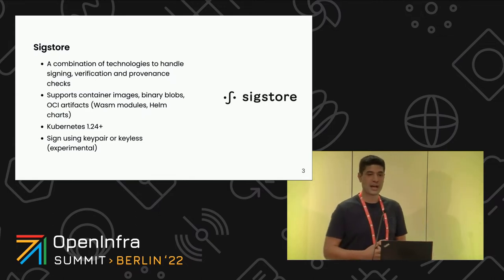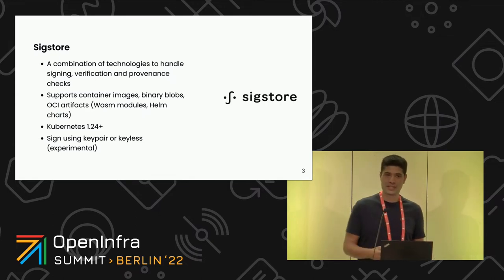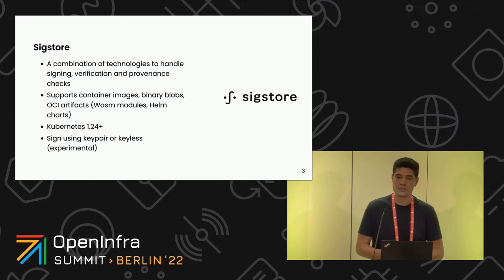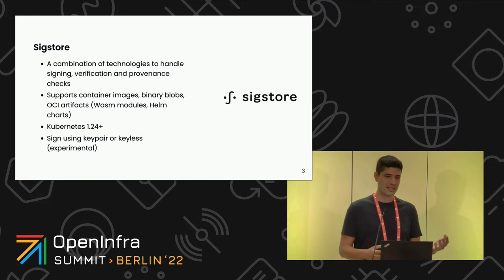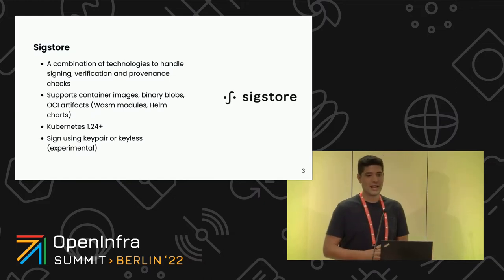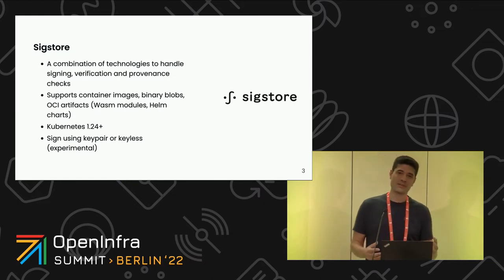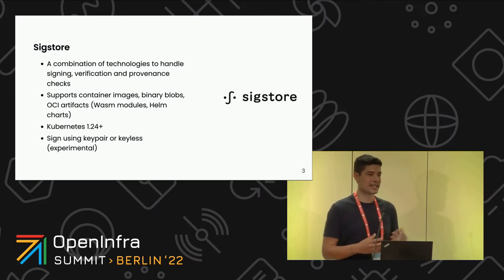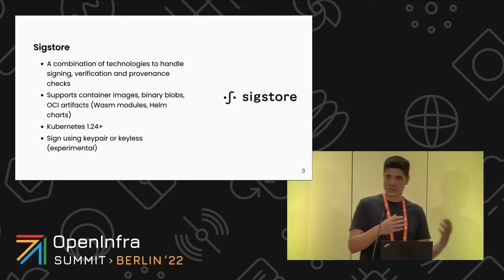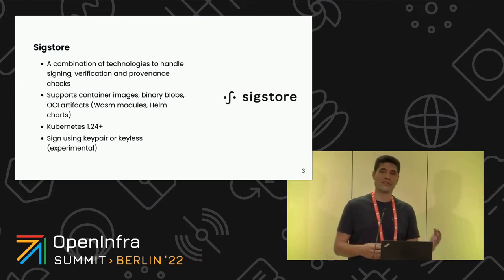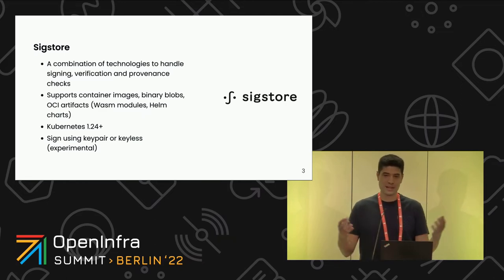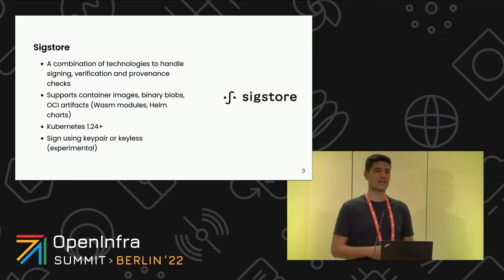Then we have Fulcio, which is a certificate authority we use for issuing certificates. And then we have Rekor. Rekor is a transparency log — think of it as a ledger where you can put some records, but you cannot modify or delete any record, and anyone can query this record for verification.